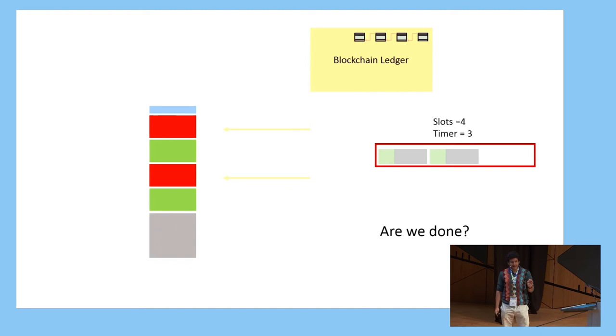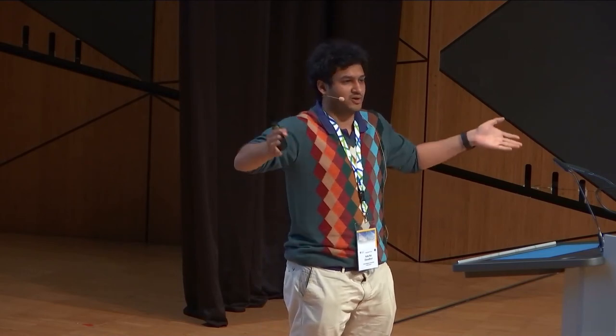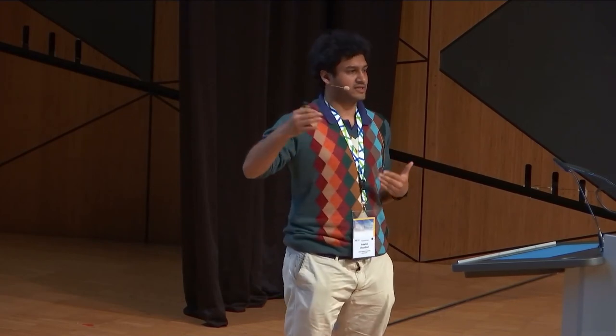There is a subtle issue that shows up in this setting: timing leakage. Simulation typically takes time larger than the running time of an honest protocol execution. Concretely, imagine the actual execution takes one block duration in the blockchain world, but simulating it takes three block durations — this is trivially distinguishable by a distinguisher who has access to the blockchain. The important point is that the time the simulator takes to complete simulation and the number of computation steps are slightly different. If the simulation is parallelizable, we can do some computation steps in parallel and hopefully eliminate timing leakage.